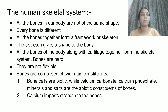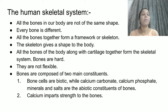Now let us look at the human skeletal system. All the bones in our body are not of the same shape — every bone is different. All the bones together form a framework or skeleton because they are arranged in a particular manner. The skeleton gives a shape to our body; if the skeleton were not there, the body would not get its proper shape.